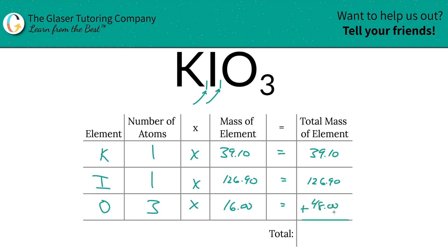Then to find the total mass of the entire compound, all you've got to simply do is add this column on up. Easy as pi. So this works out to be 214.